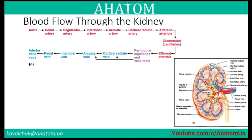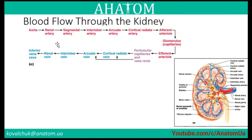Blood flows through the kidney via: renal artery, segmental artery, interlobar artery, arcuate artery, cortical radiate artery, afferent arteriole, and into the glomerulus and peritubular capillaries. Efferent arteriole leads to peritubular capillaries and vasa recta. Return flow goes through cortical radiate vein, arcuate vein, interlobar vein, renal vein, and inferior vena cava.